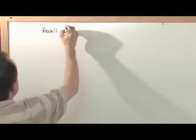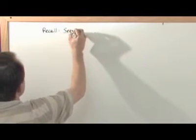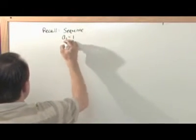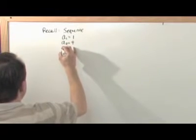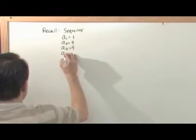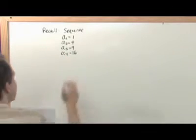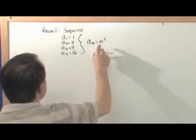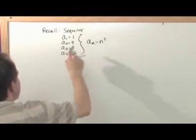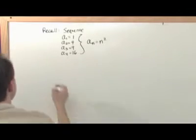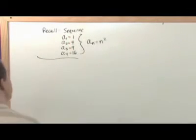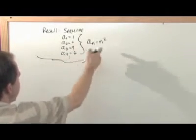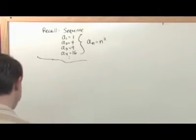Recall that a sequence is just a list of numbers like this. You would have a₁ equal to 1, a₂ equal to 4, a₃ equal to 9, a₄ equal to 16. This would be a sequence, and you would write the general form as aₙ = n². Because each value of n you put in — 1, 2, 3, and 4 — you get back the square of it. This sequence can go on with dot dot dot onto infinity; if you put a bigger n in, you get a₅, a₆, a₇, and so on.